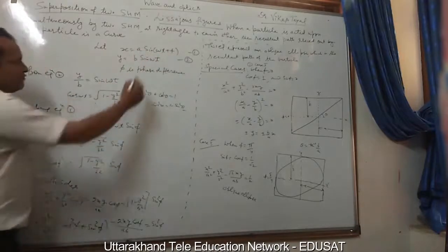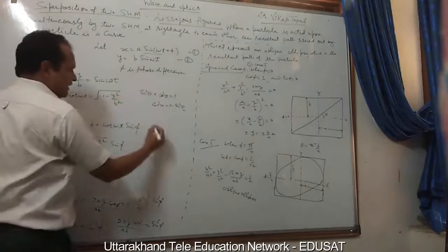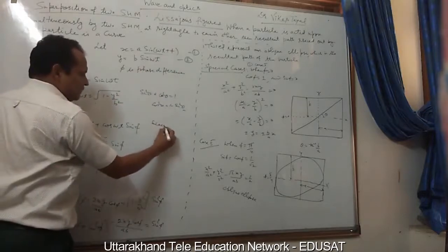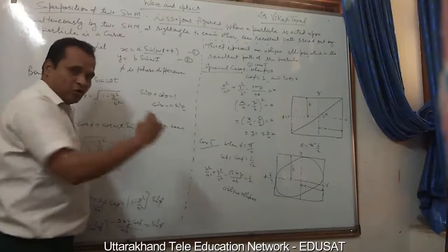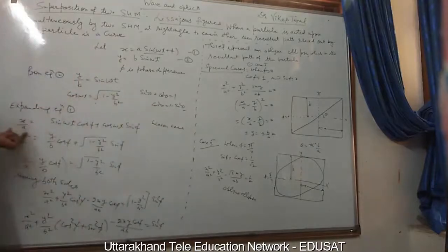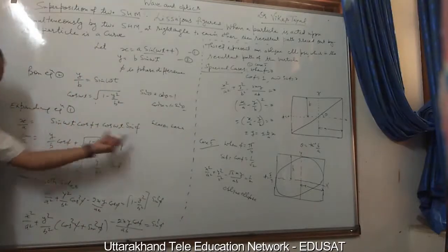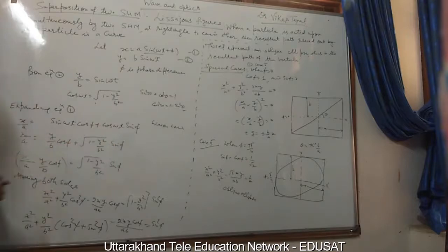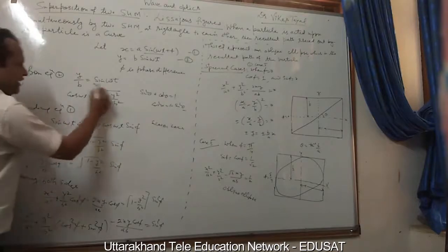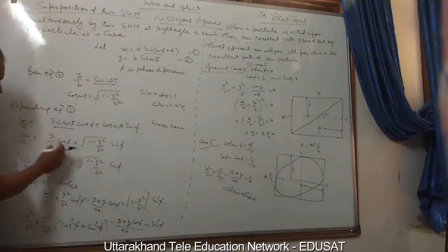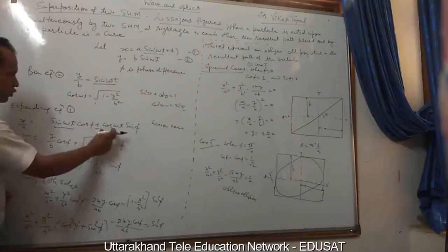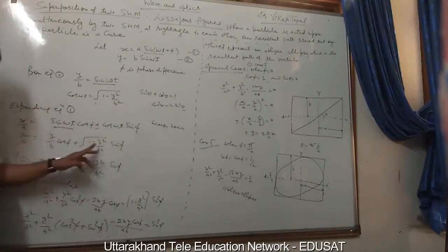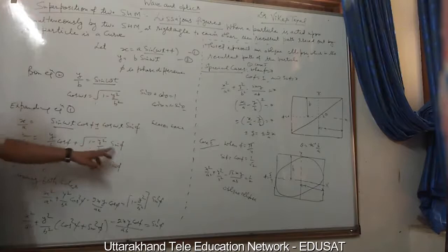Expanding equation 1: x/a = sin(ωt + φ). Using the formula sin(A + B) = sin A cos B + cos A sin B, we get x/a = sin(ωt)cos(φ) + cos(ωt)sin(φ). Substituting, x/a = (y/b)cos(φ) + √(1 - y²/b²) · sin(φ).